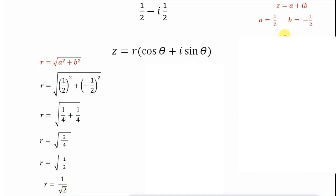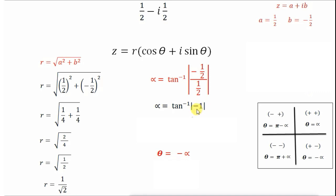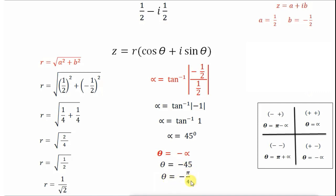Next, let us find theta. We check the sign of a and b: a is positive and b is negative, which corresponds to the fourth quadrant. So we choose theta = -alpha. First we calculate alpha: alpha = tan⁻¹(|b/a|) = tan⁻¹(|-1/2 ÷ 1/2|) = tan⁻¹(1) = 45°. Therefore theta = -alpha = -45° = -π/4. So the modulus r = 1/√2 and argument theta = -π/4.